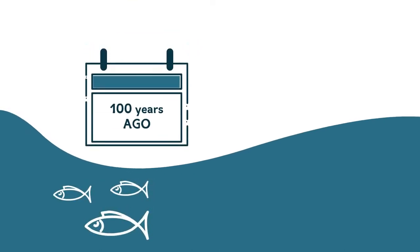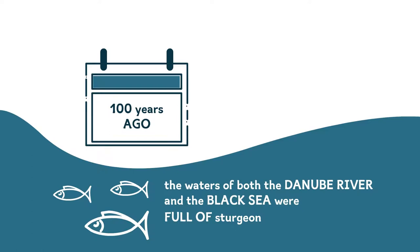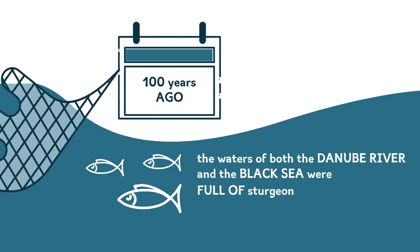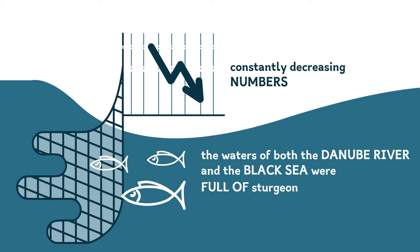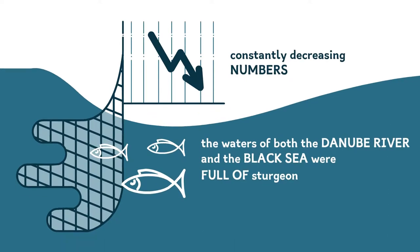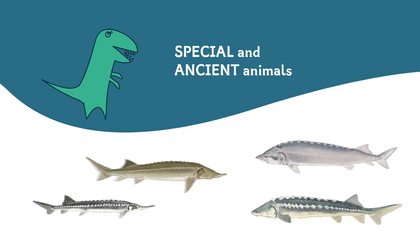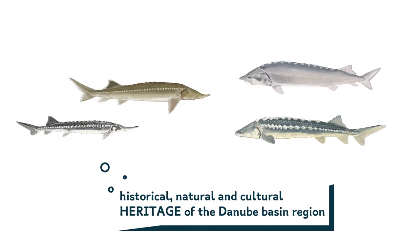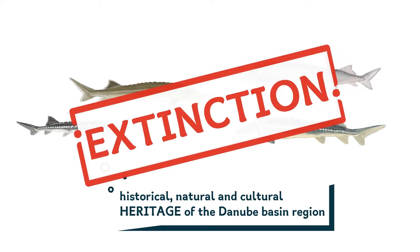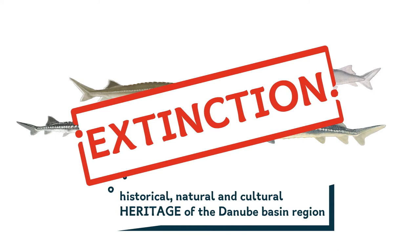Until a hundred years ago, the waters of both the Danube River and the Black Sea were full of sturgeon. I'm not exaggerating. However, knowing how many obstacles and threats these fish face, it is no wonder their numbers are constantly decreasing. And they're such special and ancient animals that we should really try to protect them. They're part of the historical, natural, and cultural heritage of the Danube Basin region. If they disappear, this will also lead to the extinction of other species and then others. In short, not a very happy tale.